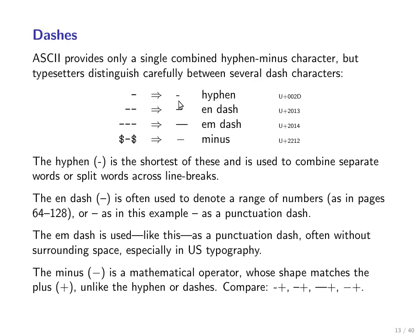How do you get all of these in TeX? A single hyphen gives you a hyphen, a double hyphen is automatically converted into an N-dash, a triple hyphen is automatically converted into an M-dash, and if you use the hyphen-minus key inside mathematics mode you will automatically get a minus instead of a hyphen.